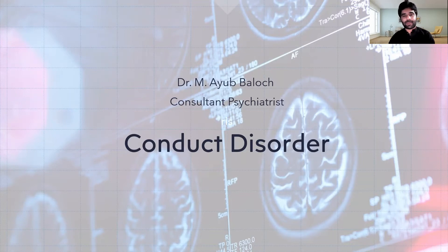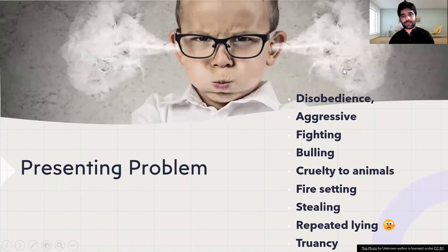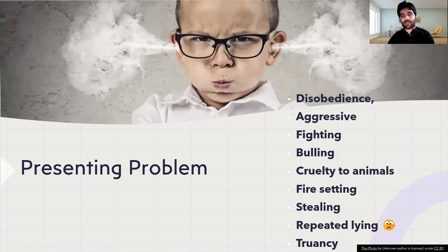Conduct Disorder is a disorder of behavior in children. The problems seen in Conduct Disorder include aggressive behavior, disobedience, biting, bullying, cruelty to animals, cruelty to other people, fire-setting, stealing, repetitive lying, and truancy.